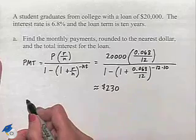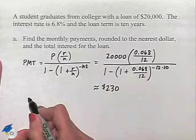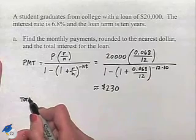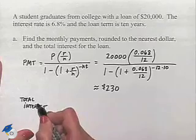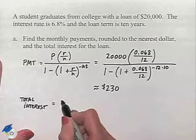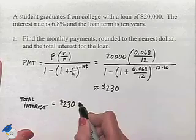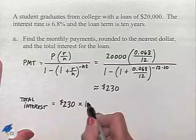Now, to find the total interest, we're going to take our total payments and we're going to subtract from that the amount of the loan. So the total interest is going to equal the total payments, which would be $230 a month. We're going to have that times 12 months times 10 years, so that's going to be times 120 payments.